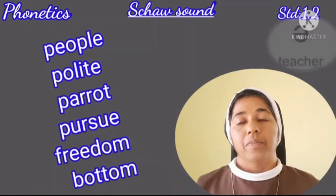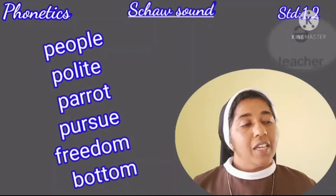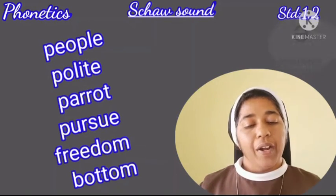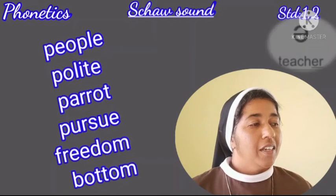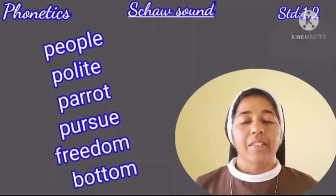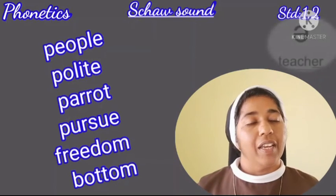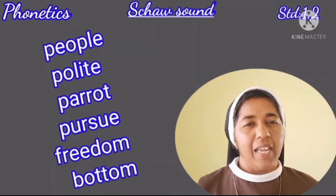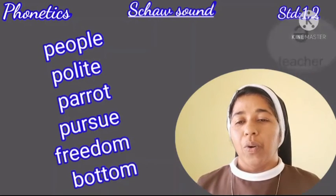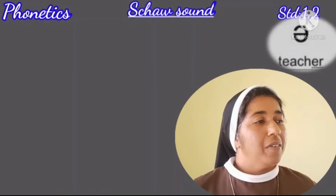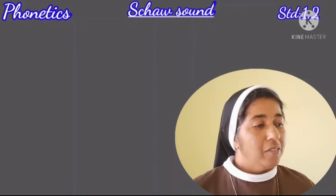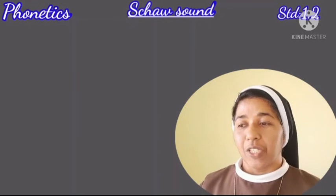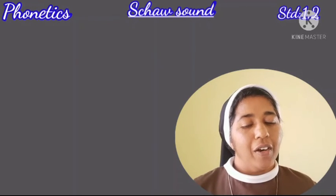More words with the schwa: 'freedom,' 'bottom,' 'second' — the last syllable gets the schwa sound. Also 'family' — it's not 'fam-i-ly' but 'family,' where the I takes the schwa sound. To recap: at the beginning — about, again, around, account, achieve. In the middle — people, parrot, freedom, bottom, polite, pursue, family. Have fun, keep up your good work. Be polite, and try to achieve what you pursue for in your life. Bye-bye.